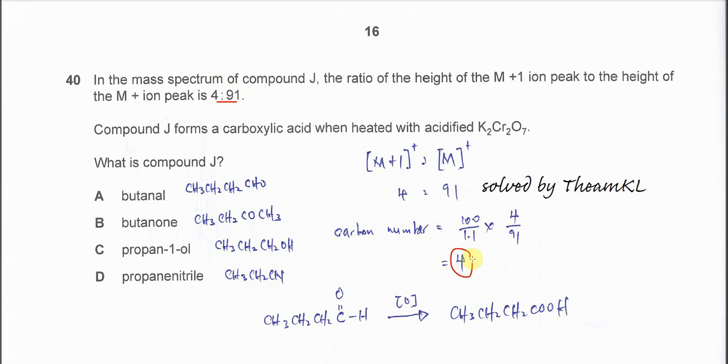So you get 4 carbons. So now the compound J has 4 carbons, so we know that propan-1-ol is not the answer because it has 3 carbons. Propanenitrile also cannot be the answer because propanenitrile also has 3 carbons. So the answer is just A or B.